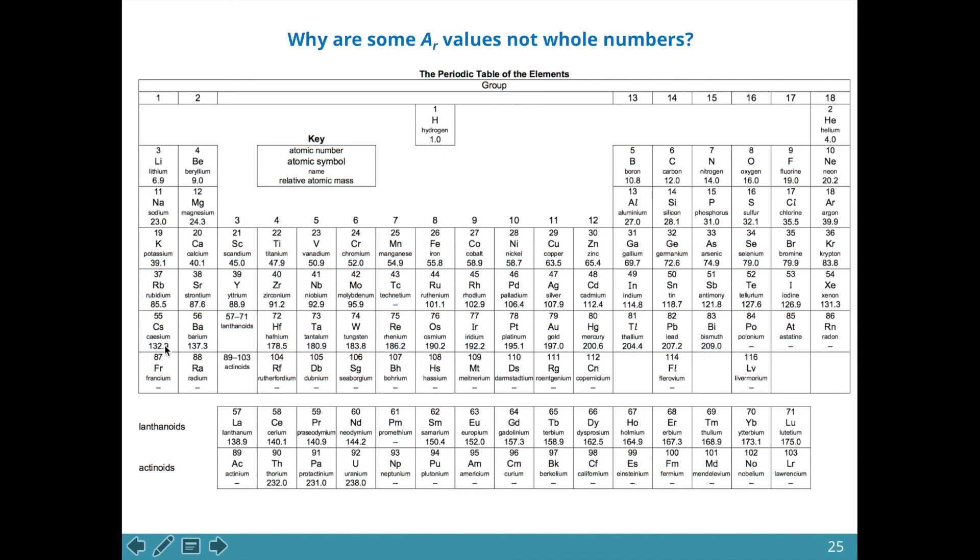So all these numbers are because of isotopes and the relative atomic mass takes the average of the masses of each of these isotopes according to how abundant they are.